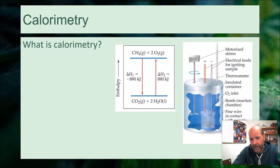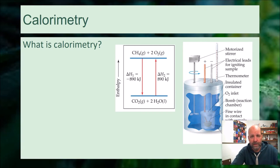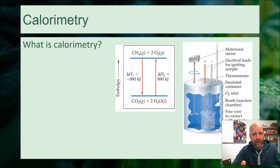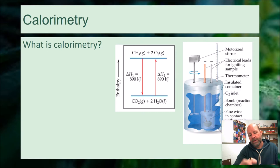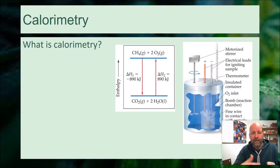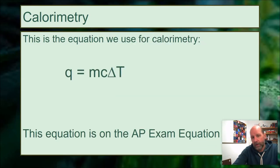In thermodynamics, we measure changes in the energy of a chemical reaction using a calorimeter. Calorimetry is a way to measure changes in energy in a system. We insulate the system from outside influences in a calorimeter — an insulated container where chemical reactions happen inside. We measure temperature changes and, based on those and the masses, we can calculate how much energy came out of or went into the reaction. The equation we use is q = cmΔT.